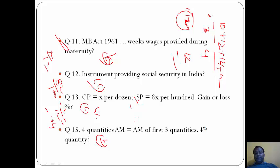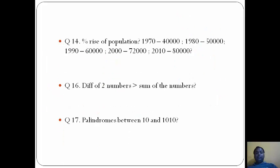In this question about population: 1970 population is 40,000, 1980 is 50,000. From 1970 to 1980 increase is 10,000. 1980 to 1990 also 10,000 increase. 1990 to 2000 is 12,000 increase. 2000 to 2010 is 8,000 increase. When we convert to percentage, the answer is B: 1980 to 1990 and 1990 to 2000 have the same percentage rise of population.